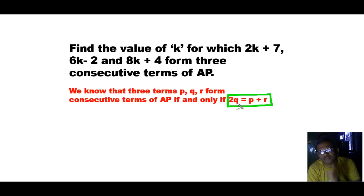It means that twice the middle term is equal to the sum of the extremes. Then the three terms will be consecutive terms of an AP. So here we will apply this condition.